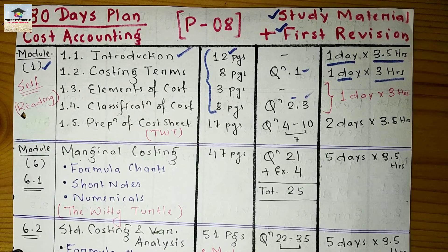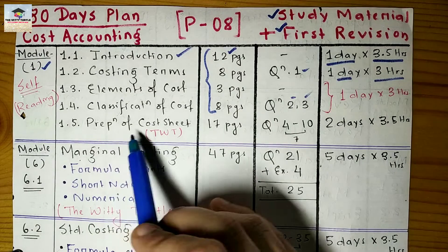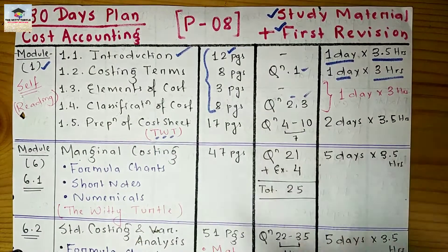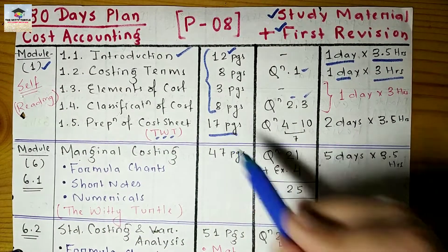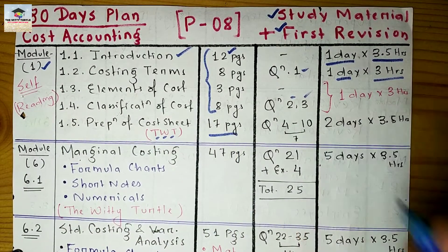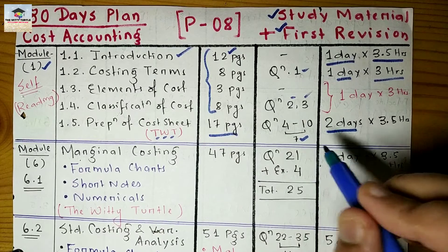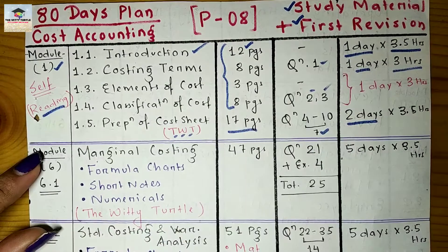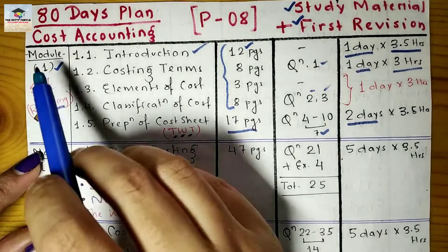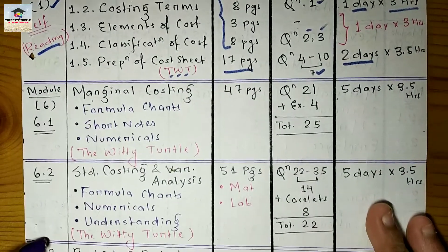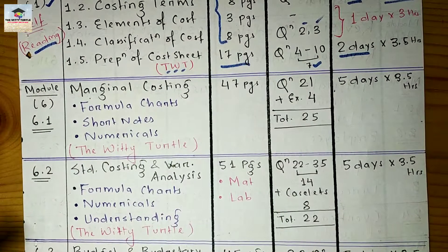The last sub-module is 1.5 — preparation of cost sheet, one of the most basic chapters, after which you can solve any chapter. You can do this from my YouTube channel, The Witty Turtle. It has 17 pages and seven questions, and will take two days. In total, five days and you'll be done with Module 1, with self-reading of this chapter.